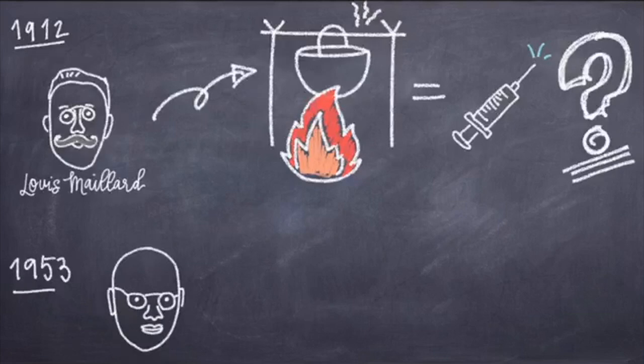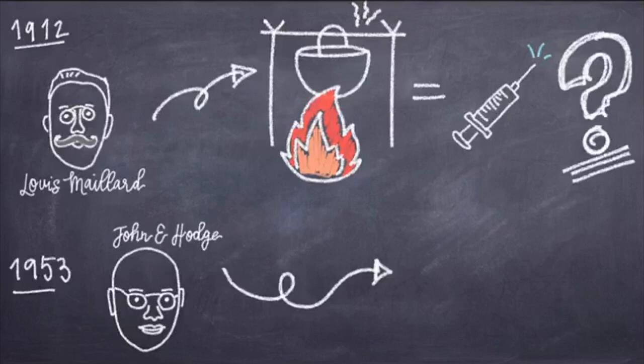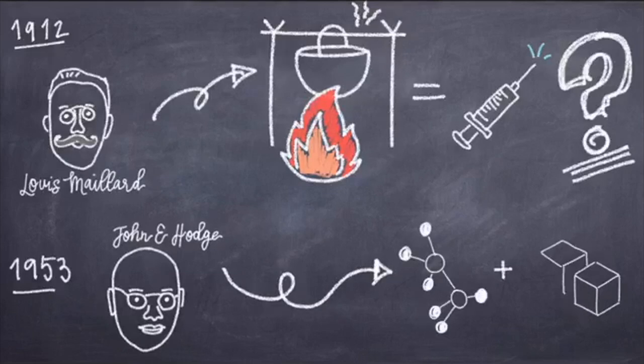That's where this guy comes along. In 1953, John E. Hodge figured out the chemistry behind the food change. He attributed it to the reactions between amino acids and sugar molecules.